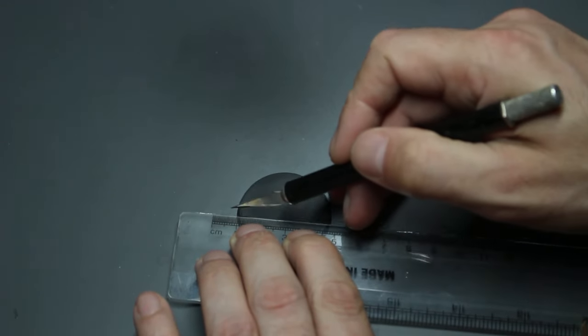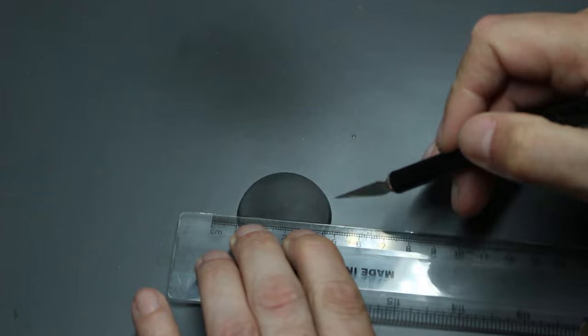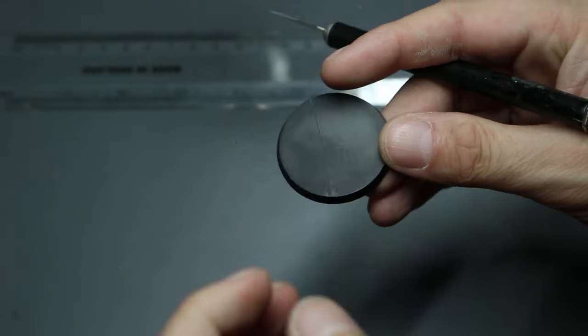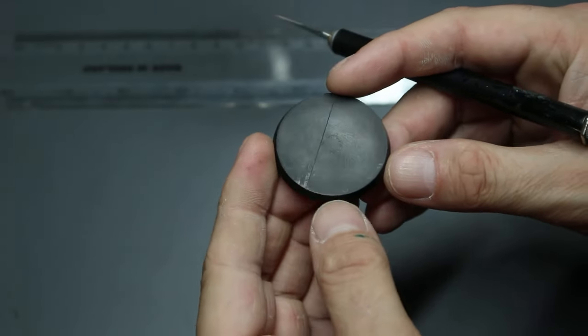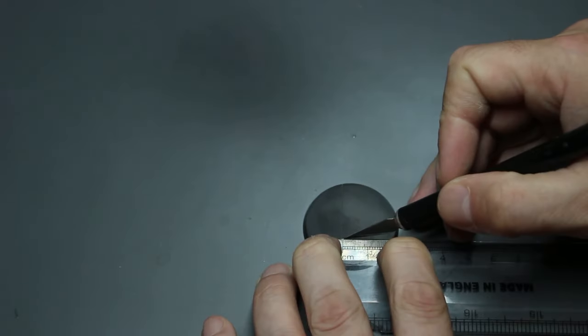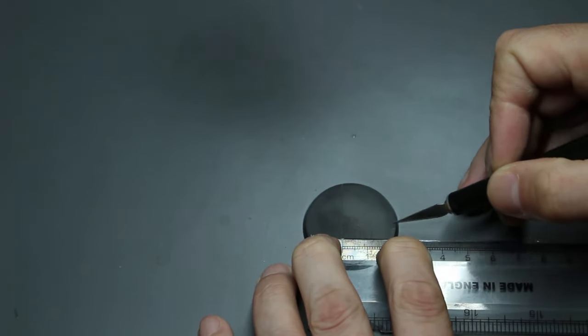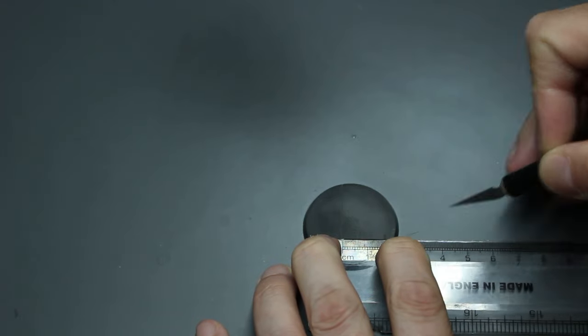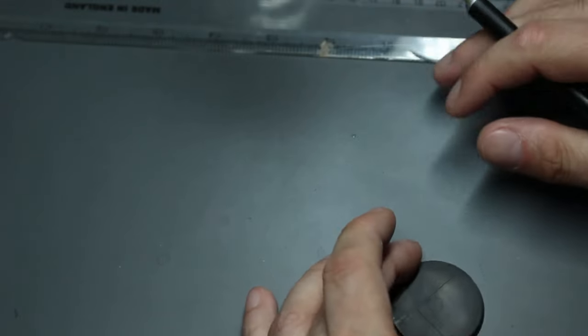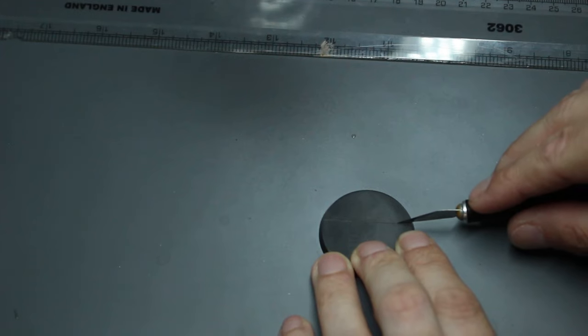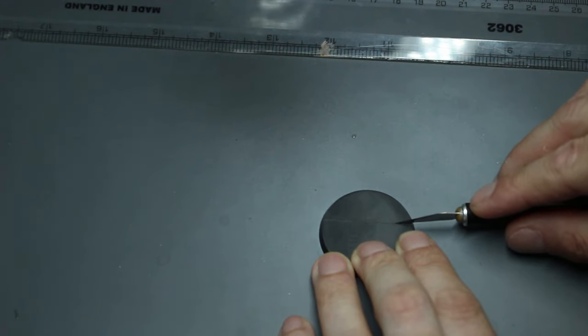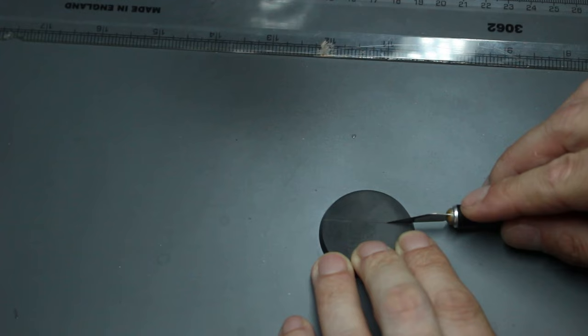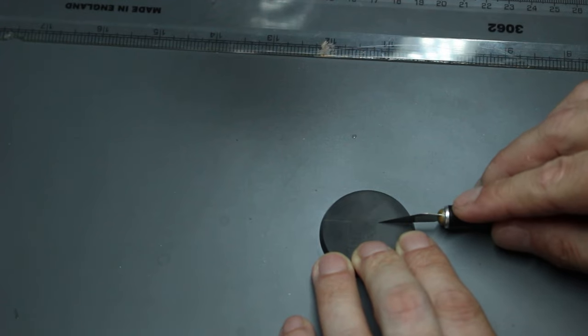All we want to do here is just score a few lines to simulate marble slabs, and you can add in cuts, chips, and cracks and things here as well. So what I'm doing is just scoring a few lines. Obviously, please be careful with sharp knives.